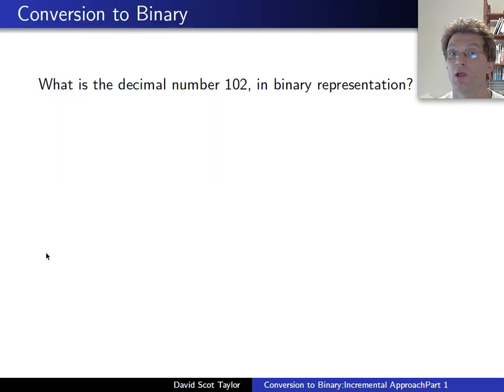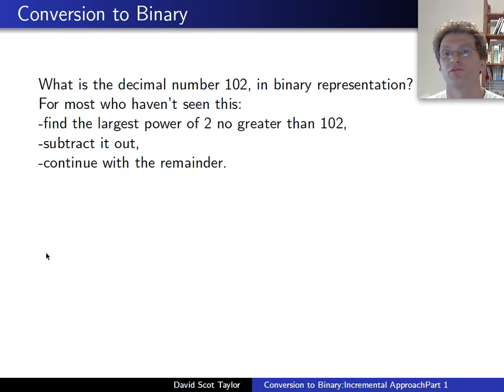There is an assumption that you already know what binary representation is. In this case, we're going to start off with an example, you have the decimal number 102, you want to put it into binary. Now, if you haven't seen the algorithm to do this before, the standard way to go would be, well, I know the biggest power of 2 which is less than 102 is 64. I'm going to subtract that number out and I'm going to continue with whatever's left.